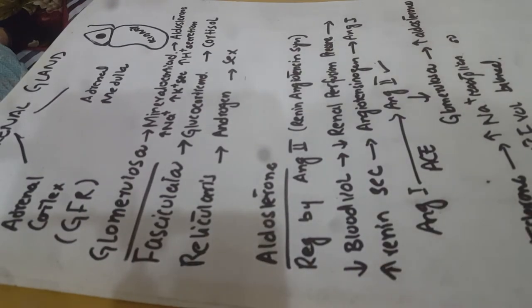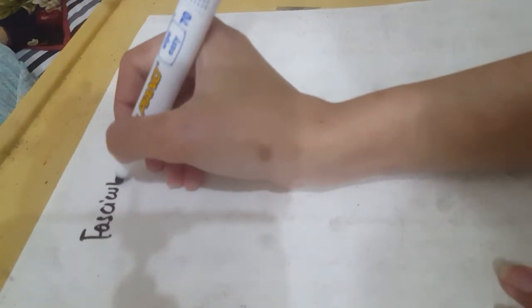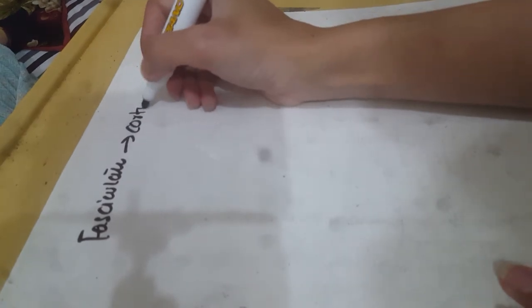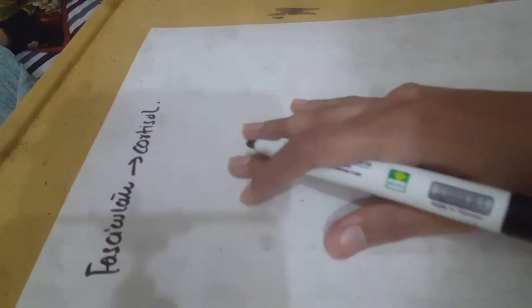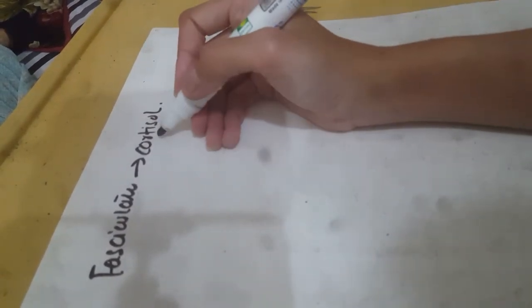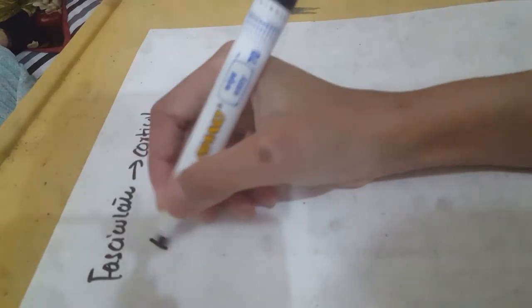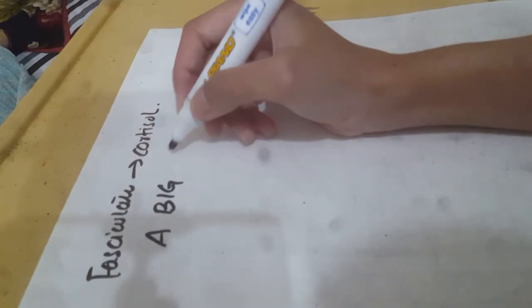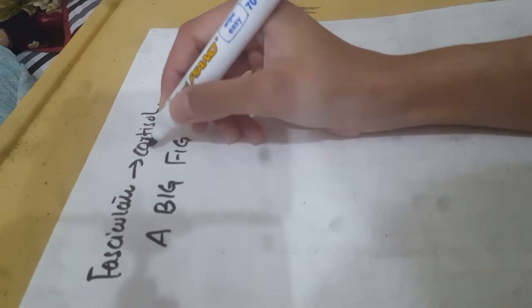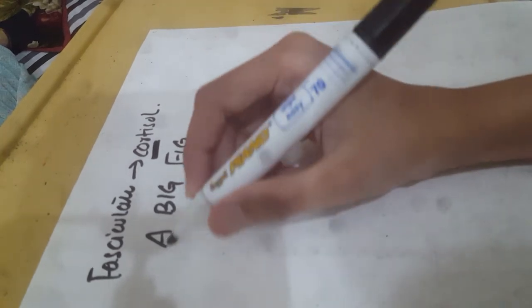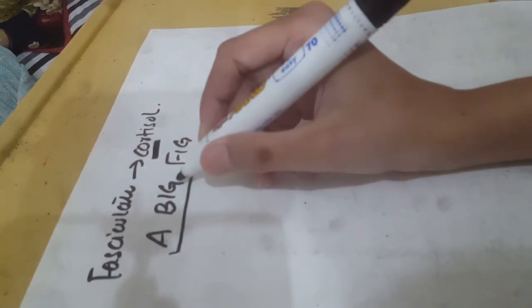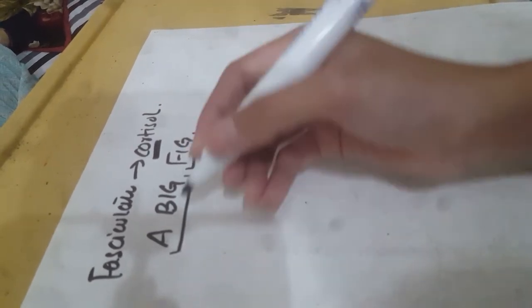After aldosterone, we have glucocorticoids, which are secreted by zona fasciculata — specifically cortisol. To remember the functions of cortisol I use the mnemonic 'A BIG FIB': these are the things that cortisol increases, and those it decreases.